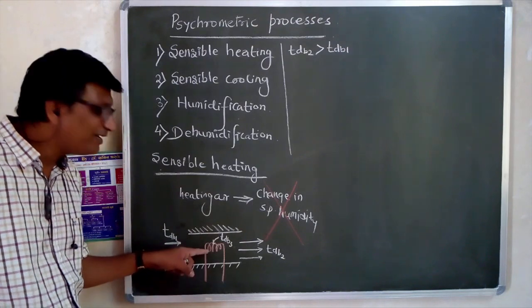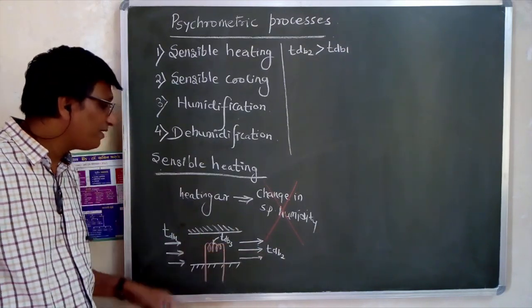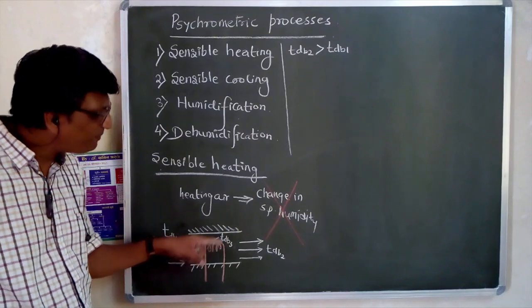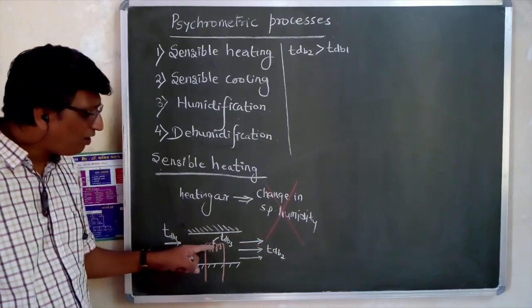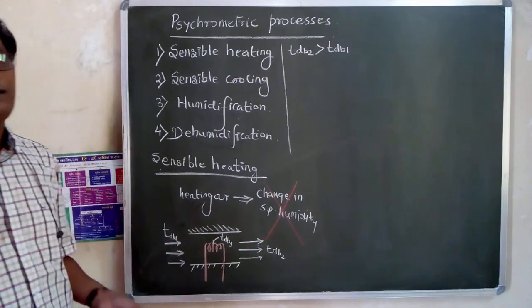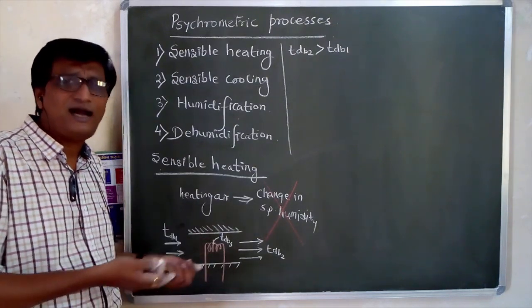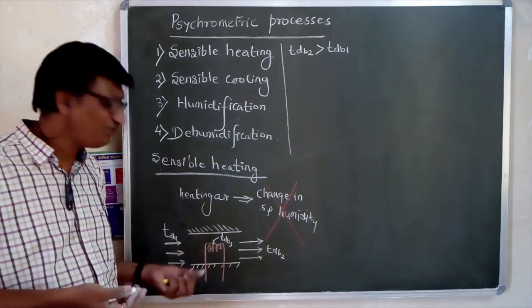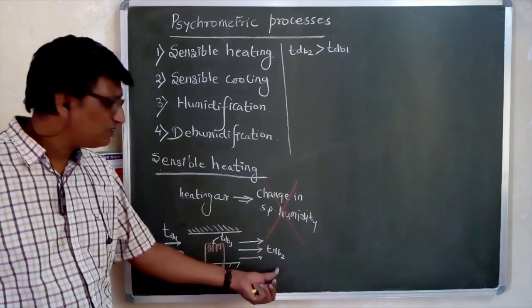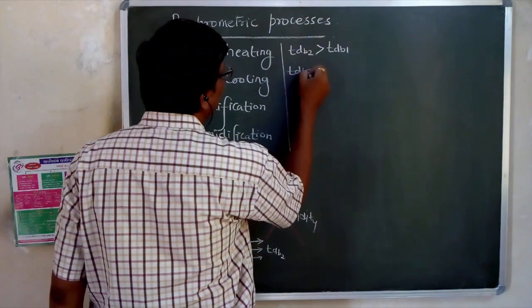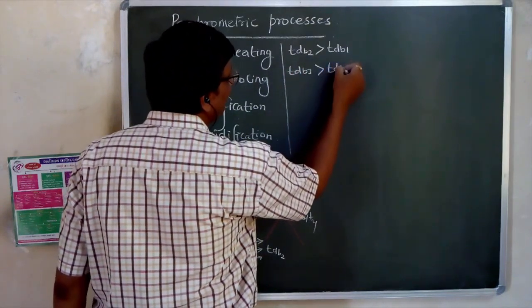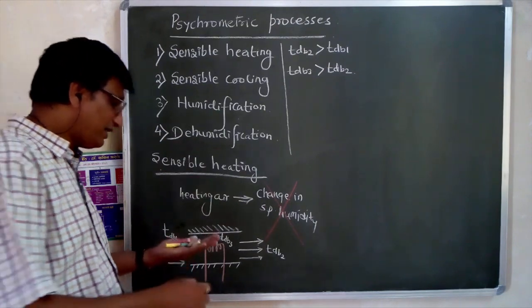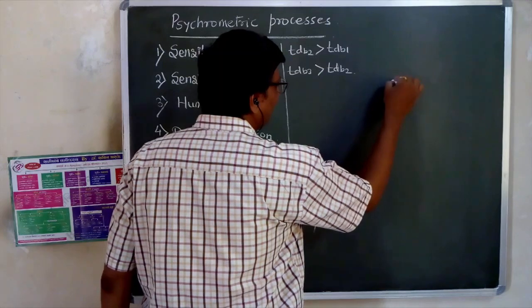One more interesting thing is that the coil temperature is more than the outlet air temperature. Why? If the efficiency of heat transfer is 100%, then the air temperature equals the coil temperature — whatever air passes through the coil takes 100% of the heat and reaches TdB3. But no process is 100% efficient, so the coil temperature is more than the outlet temperature. That means TdB3 is greater than TdB2. This is the sensible heating process. Now let us see that process on the psychrometric chart.